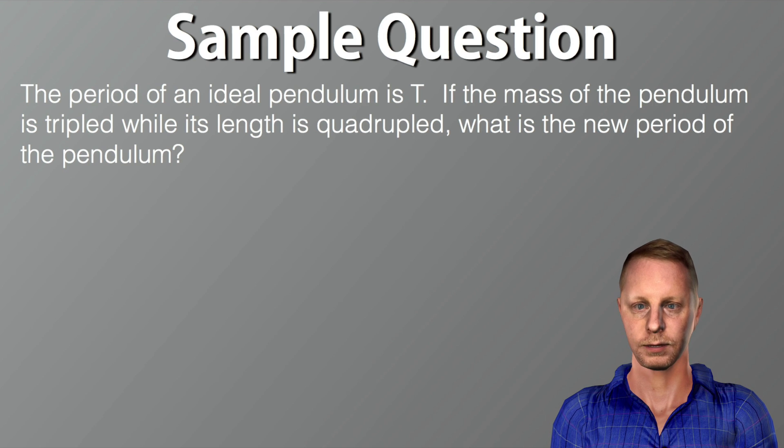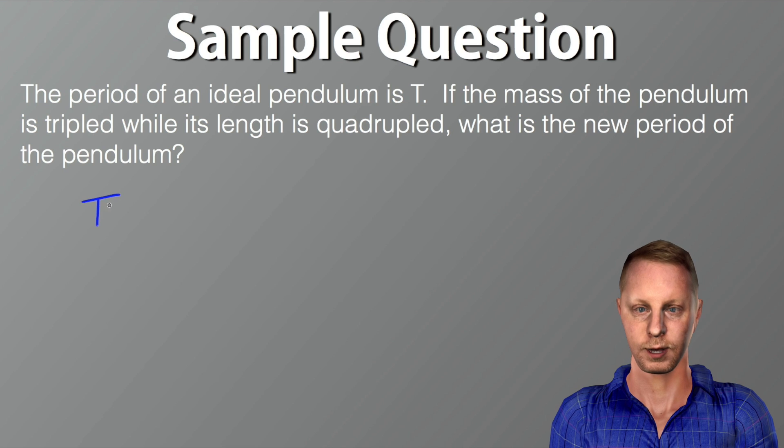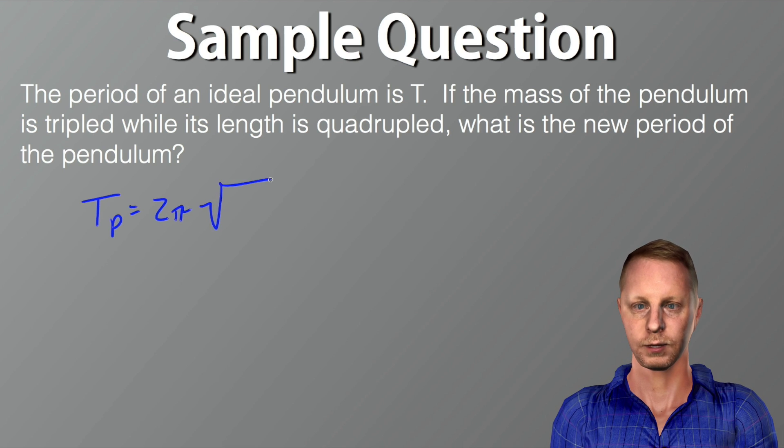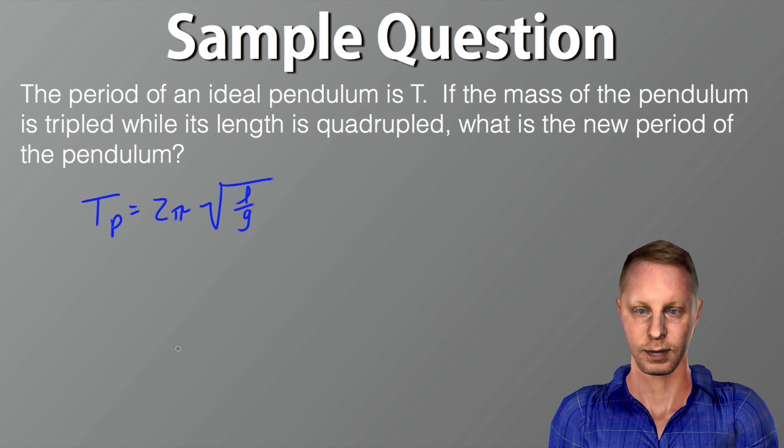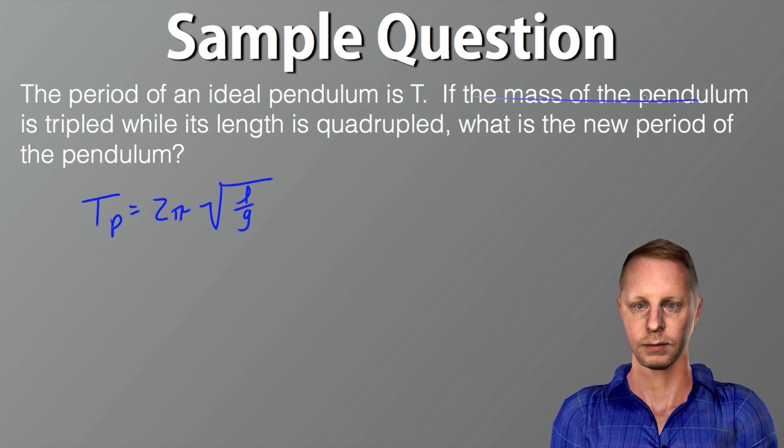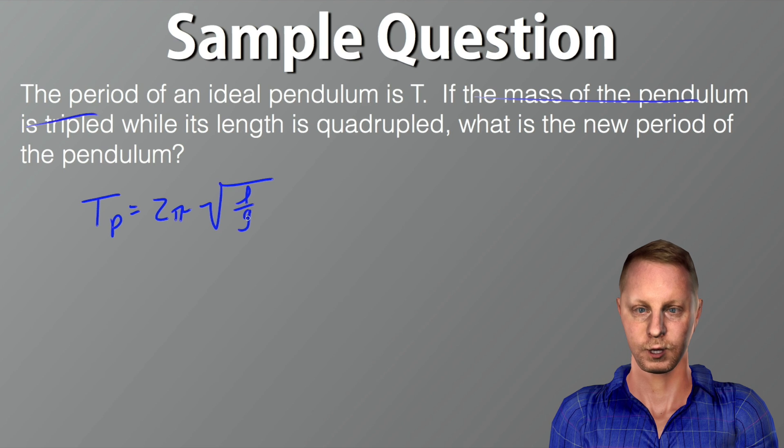Let's take a look at a sample question here. The period of an ideal pendulum is t. If the mass of the pendulum is tripled while its length is quadrupled, what is the new period of the pendulum? Well again, the period of an ideal pendulum is 2π square root l over g. Mass doesn't make any difference, so we don't care if the mass is tripled. That doesn't matter at all. But if its length is quadrupled, well now we went from 2π square root l over g to 4l over g. So really we've multiplied the right side by square root of 4, or 2. So we'd have to put a 2 over there in order to keep that equation the same. So really what's happened is we've gone from t to 2t. What's the new period of the pendulum? Two times its original period.